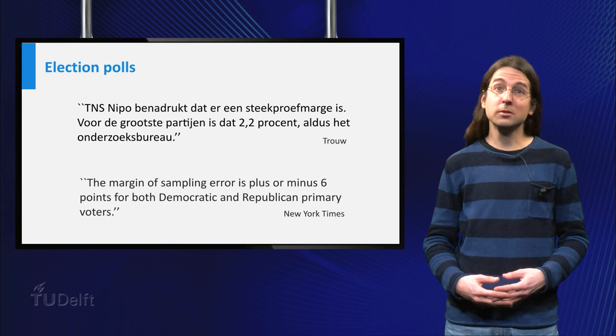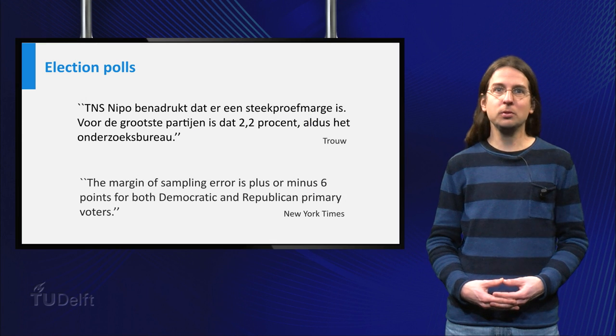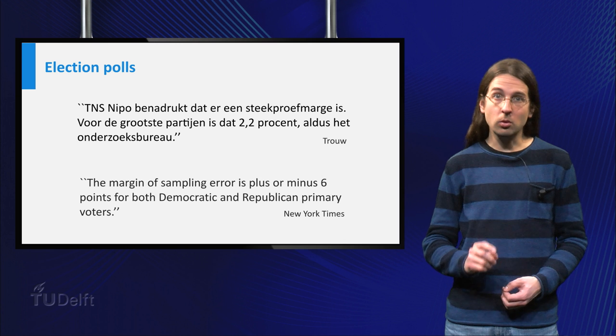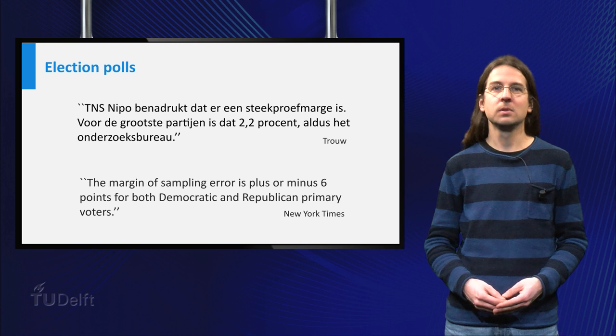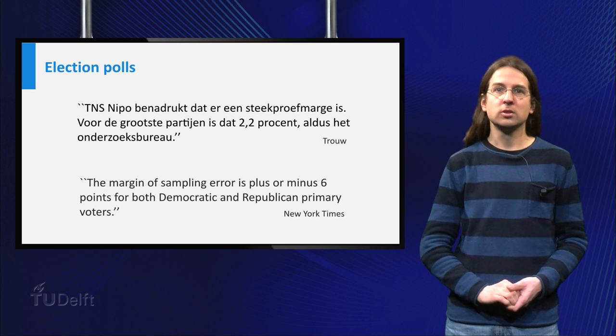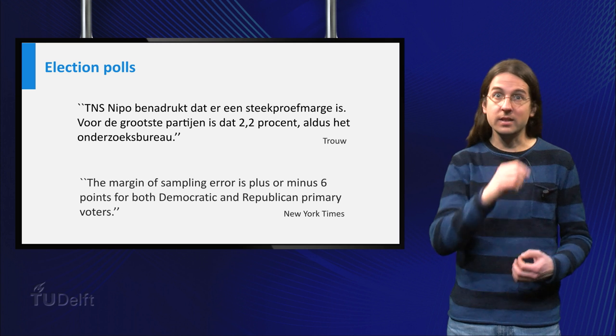Welcome. In good newspaper articles about election polls, they will not just tell you how many votes each party is projected to get, but also what the error is. So the articles could say that party X would get 15 plus or minus 2 seats. So what does this plus or minus mean?